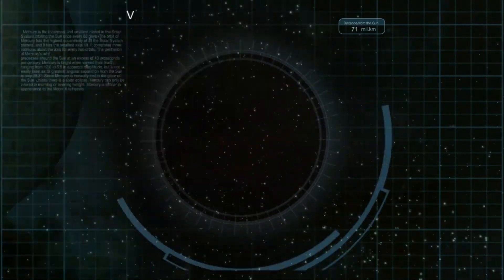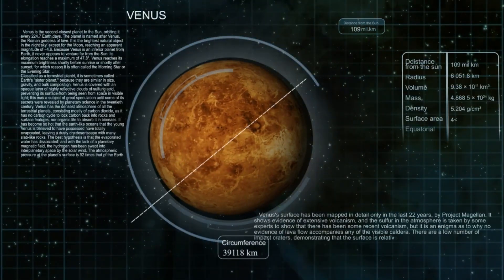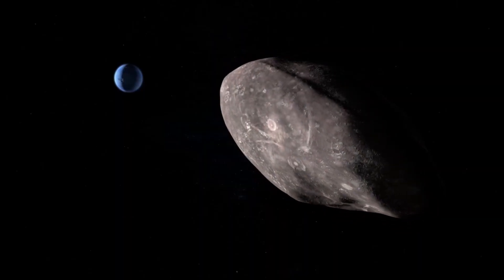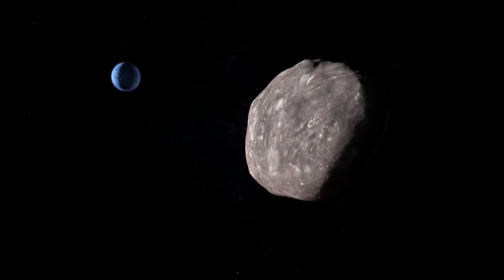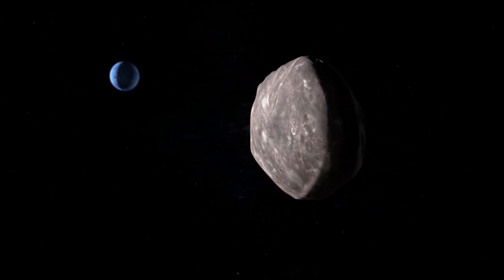In 1986, Voyager 2 discovered 10 new moons orbiting Uranus, and three years later, it observed the fastest wind speeds ever recorded for a planet, up to 1,000 miles per hour, as it passed Neptune.